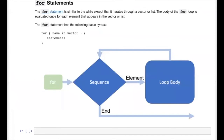The for loop is similar to the while loop, except in R it's used to iterate through sequences. A for loop executes a loop body once for every element in the passed sequence. Looking at the diagram, for every element in the sequence we execute the loop body one time before getting another element, continuing until the sequence is exhausted and the loop exits.